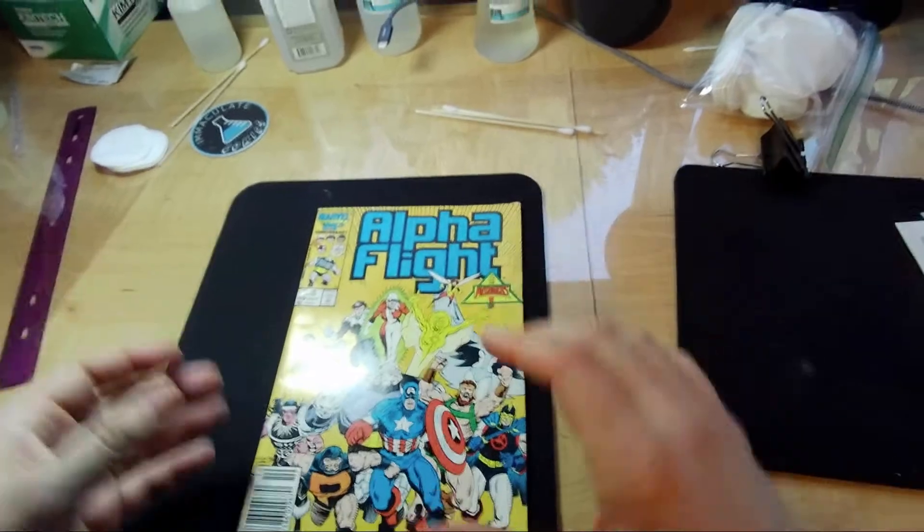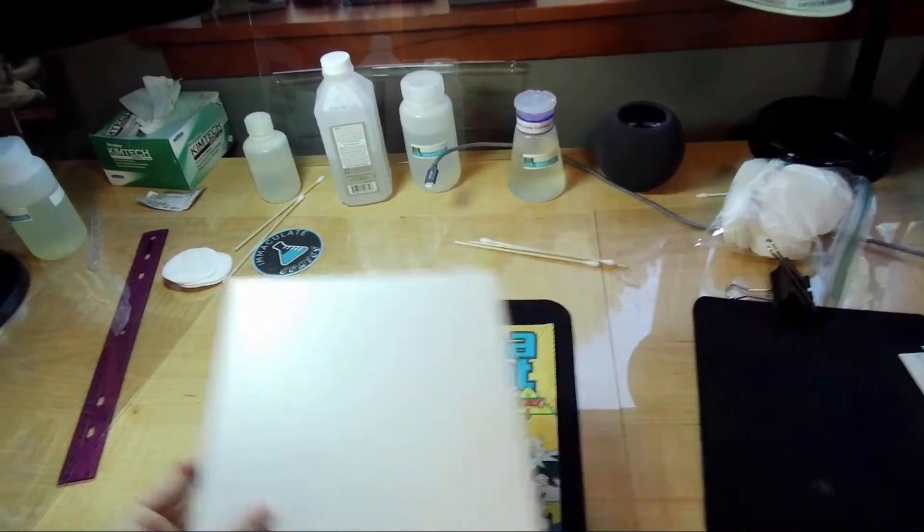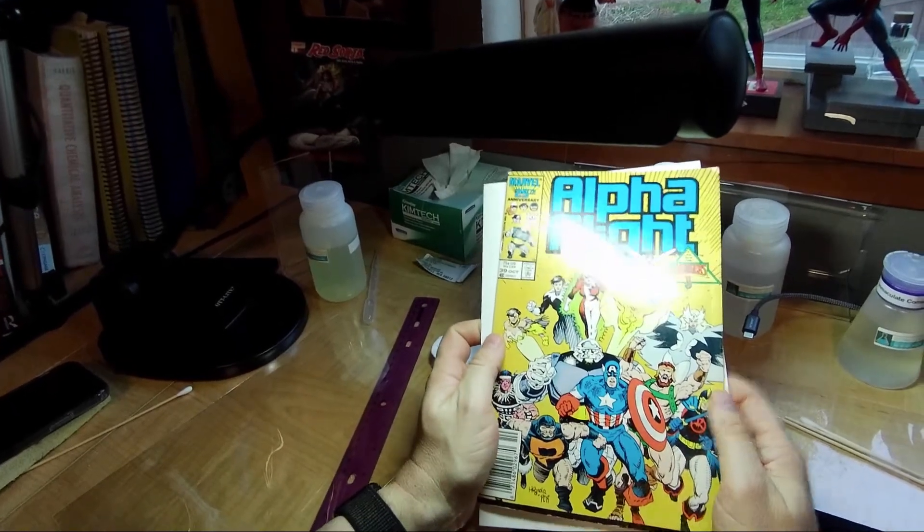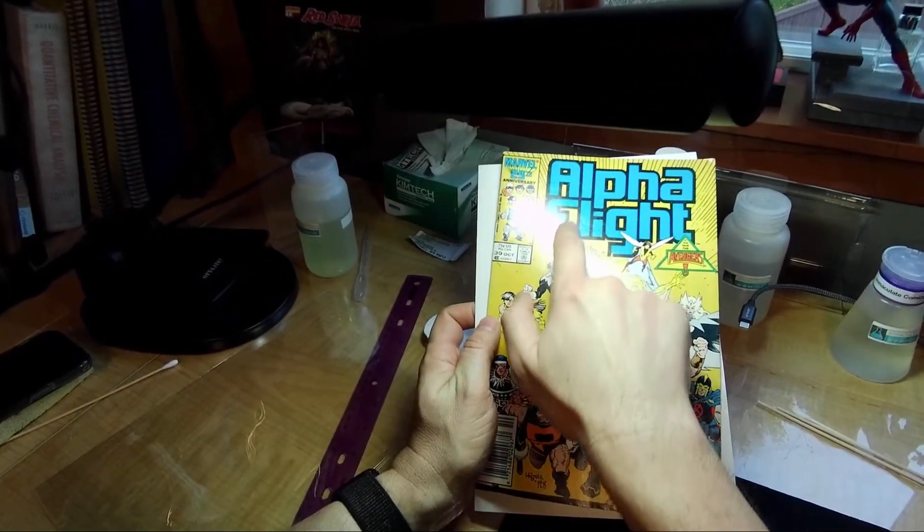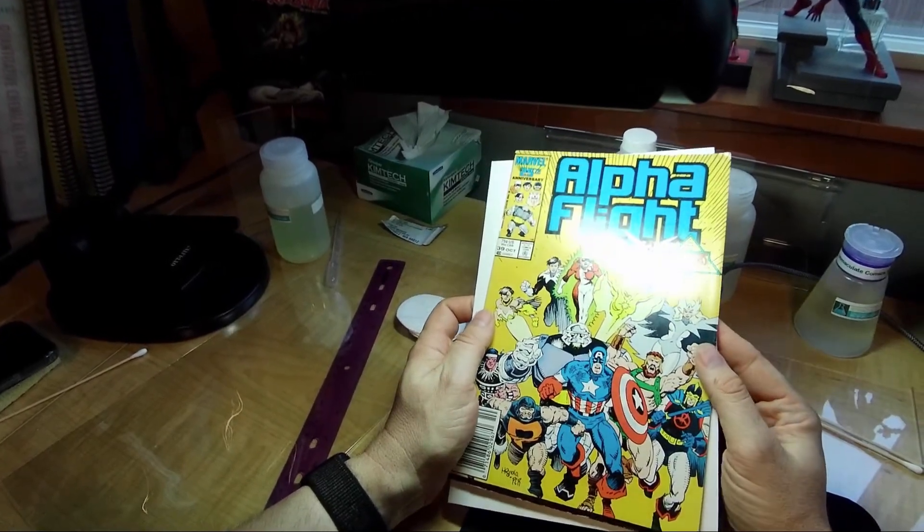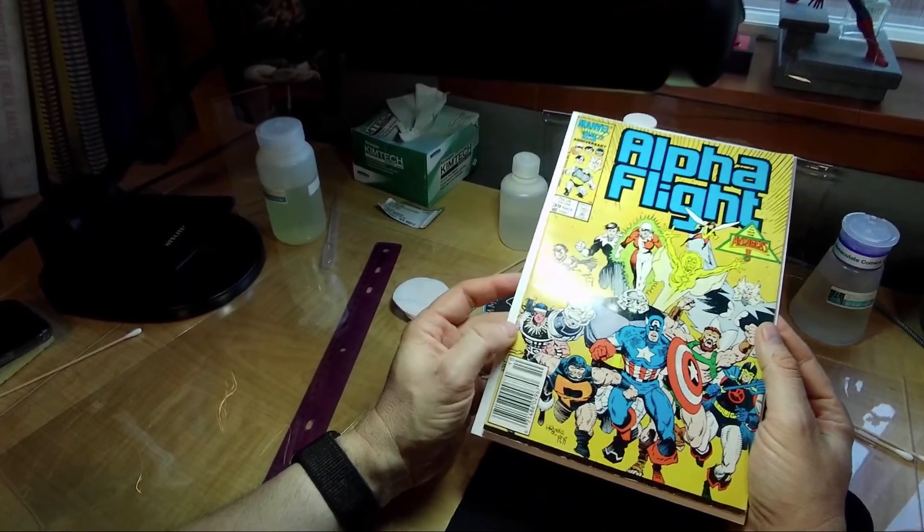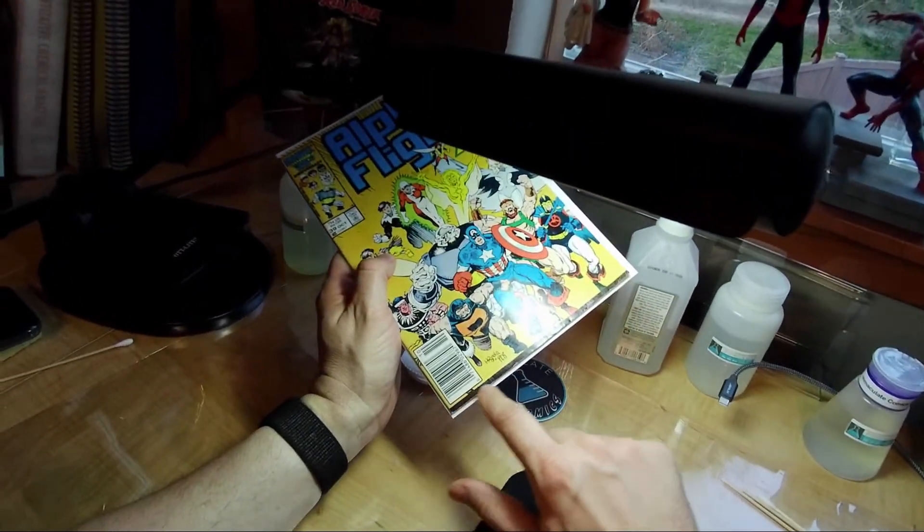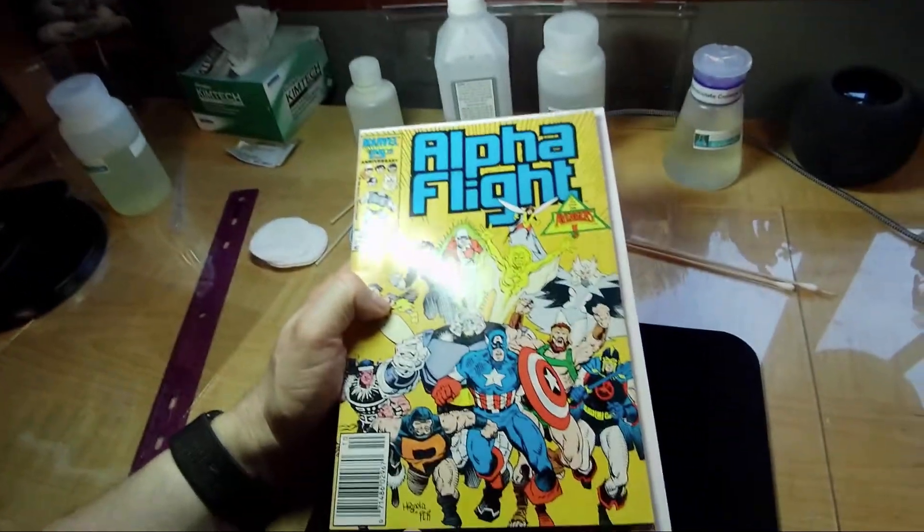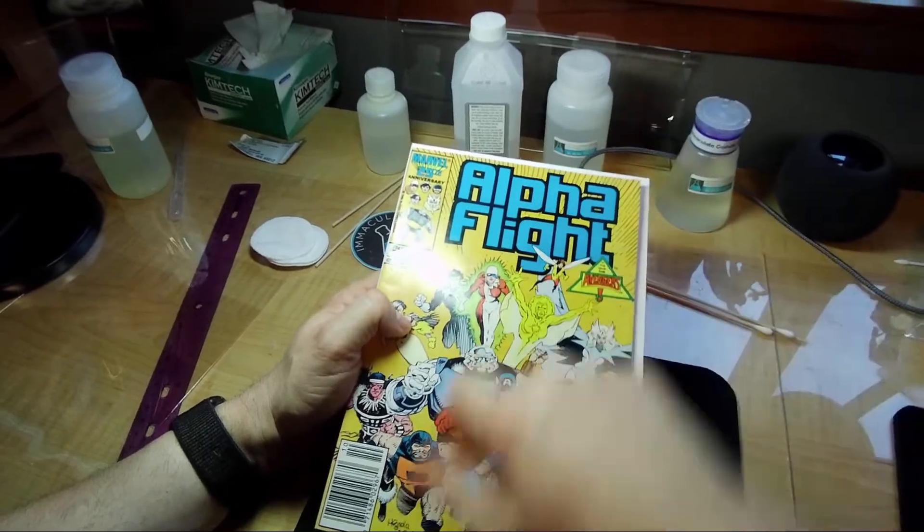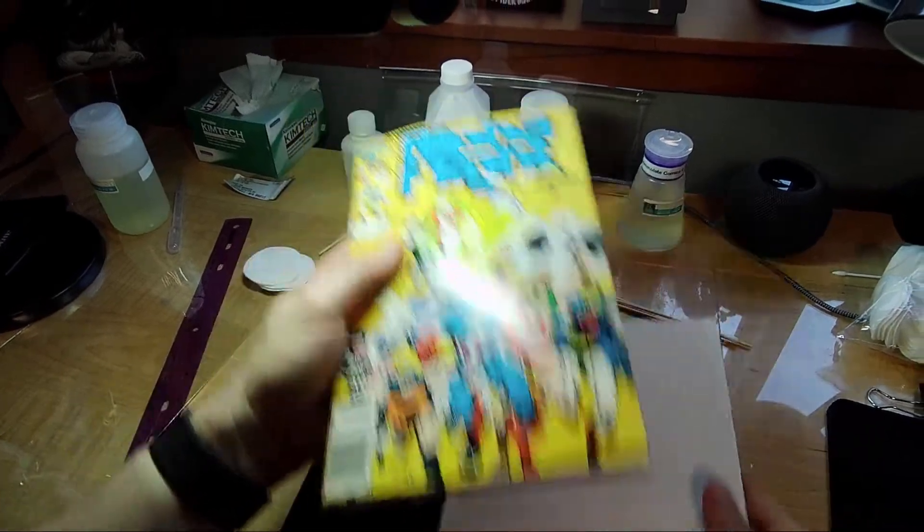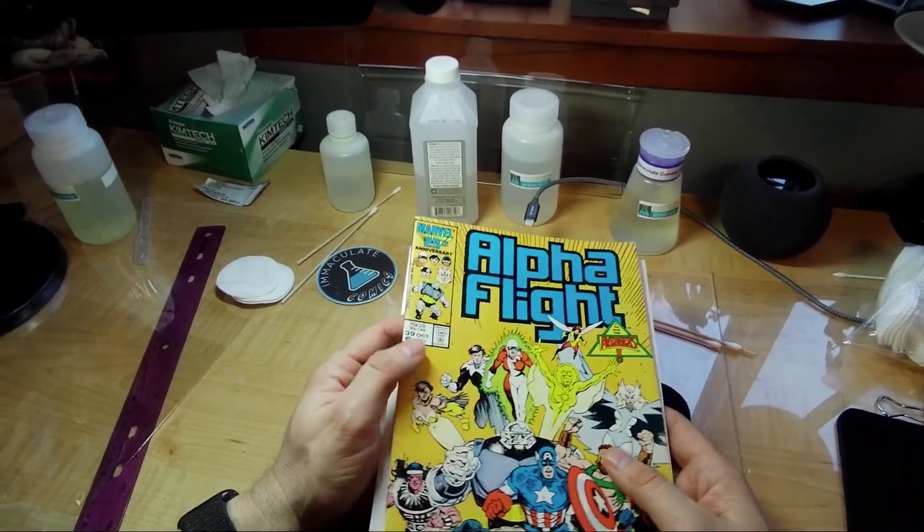So what do we have here? We have an Alpha Flight number 39 from 1986. And this book is not exceptional in many ways. If you look at the cover, I'll try to get the glare and you can see some deep indentation here that some people will tell you need to take a ball bearing or something and press that out to get up. It's not true. There are a lot of little spine ticks here. Most notably, no one cared about this book because you see these little dents on the bottom.